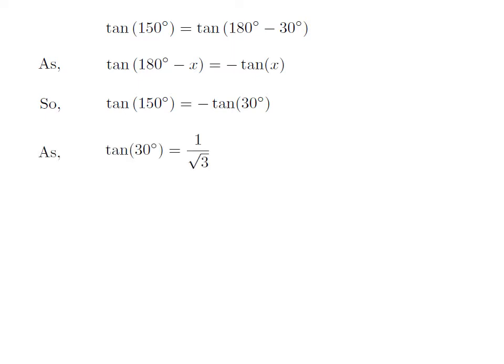We know the value of tangent of 30 degree is equal to 1 upon square root of 3. So, tangent of 150 degree is equal to minus 1 upon square root of 3.